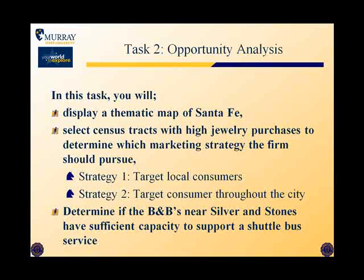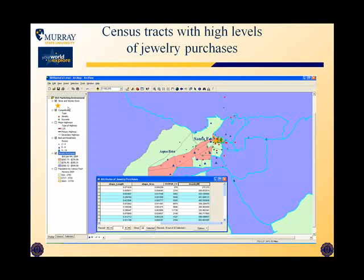Then you will focus on the database functions to determine the feasibility of the shuttle bus service. You'll produce a map showing the highest jewelry purchases per household by census tract throughout the Santa Fe area. In the table, the selected records represent the census tracts with the highest level of purchases. If those are in close proximity to the Silver & Stones store, you can use a local customer strategy.